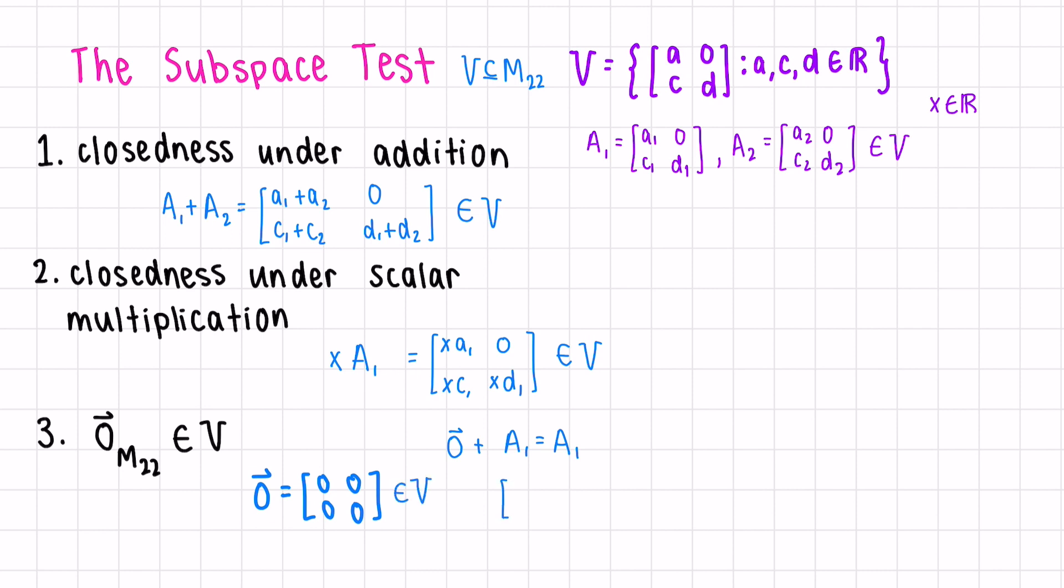And it has the same property. If we were to do 0, 0, 0, 0 plus A1, we would get back A1. Since V satisfies these three conditions, we can conclude that V is a vector space.